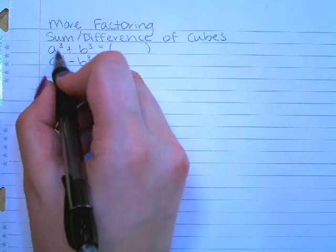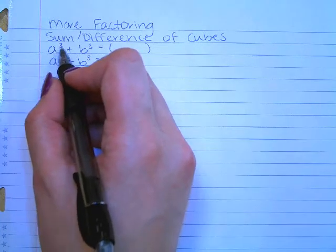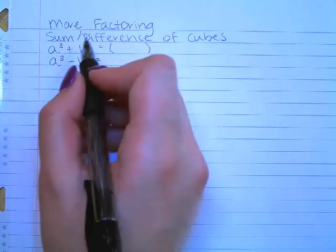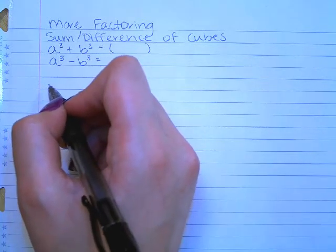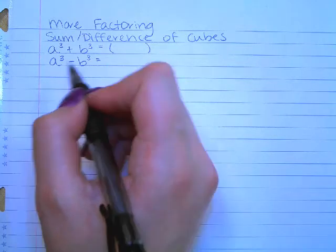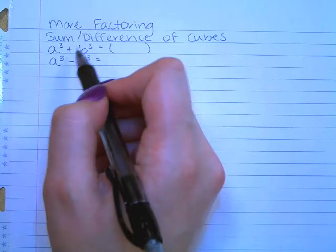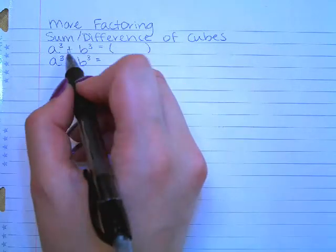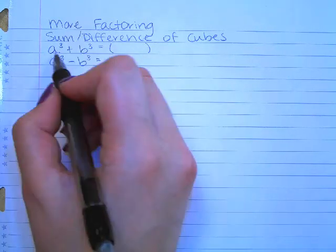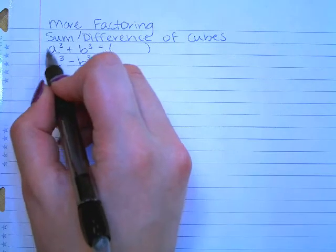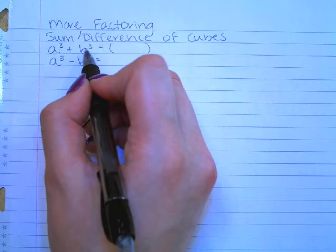Once you've figured out what the number is — so you're going to start with a number like 27 and say, oh, 27 is actually three to the third. Or you might start with 64 and say, 64 is actually four to the third. First you're going to break the number down and see what it is to the third power. Then your first set of parentheses is going to be this term, same sign, this term. So a, same sign, b.